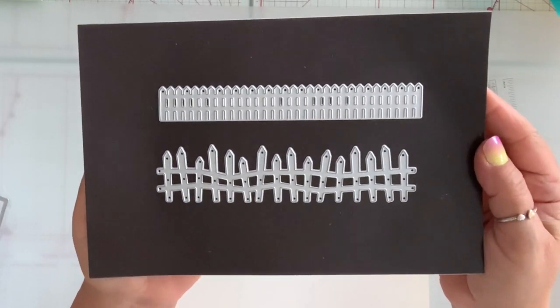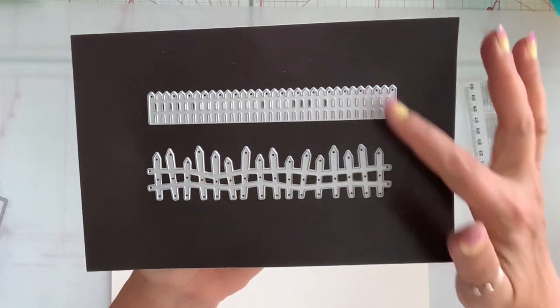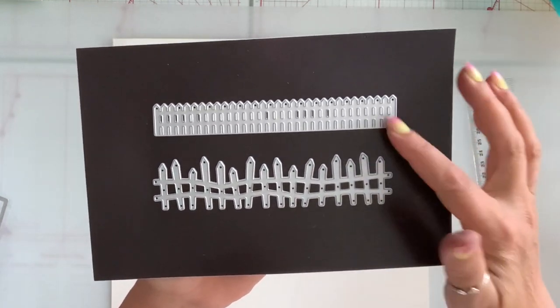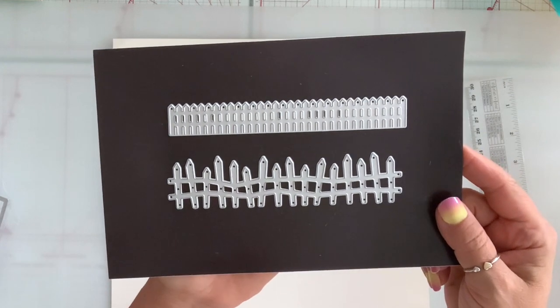Next, I have these two fence dies. And these are two separate dies. I'm just showing them together because they're both fence.